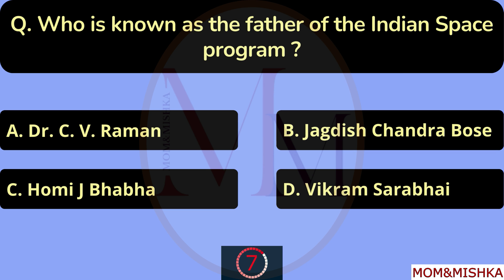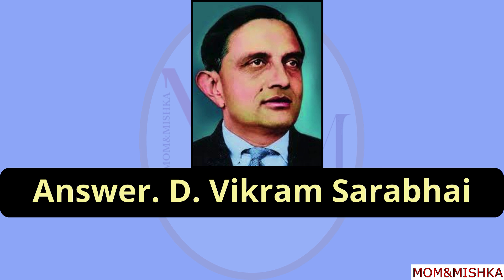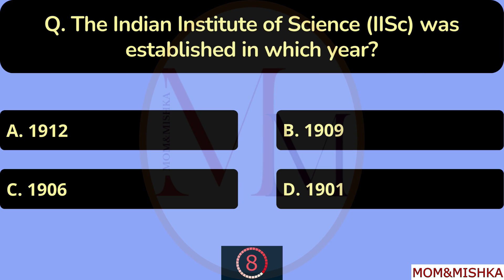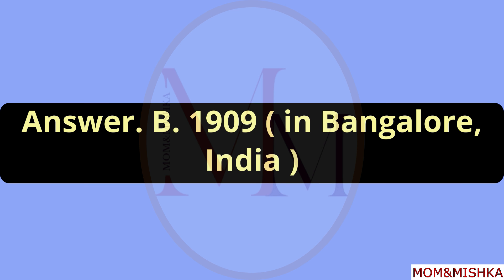Who is known as the father of Indian Space Program? Vikram Sarabhai. Option D. The Indian Institute of Science was established in which year? In 1909. Option B, in Bangalore, India.